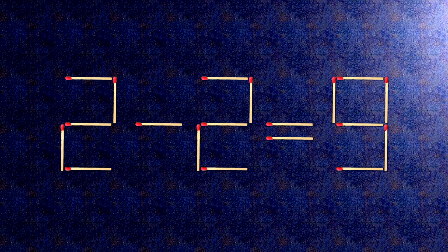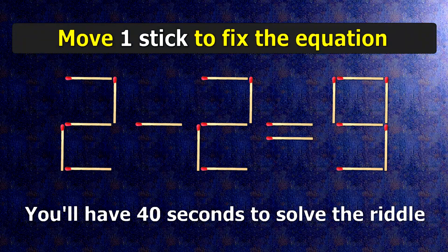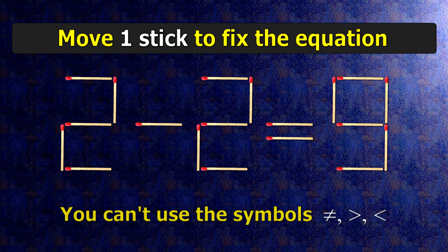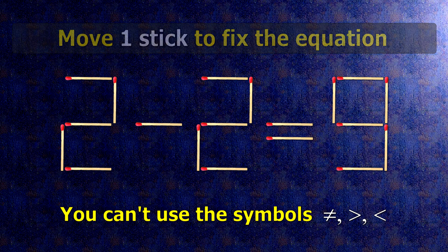We have the equality 2 minus 2 equals 9. Our equality is wrong. We need to move one match to make our equality correct.